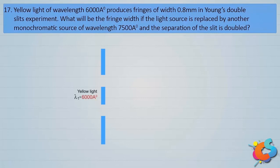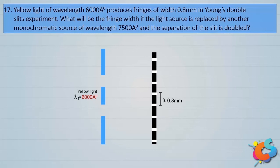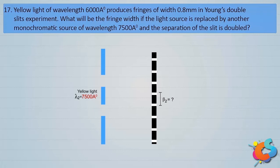Next question: Yellow light of wavelength 6000 Å produces fringes of width 0.8 millimeters in a Young's double slit experiment. What will be the fringe width if the light source is replaced by another monochromatic source of wavelength 7500 Å and the separation of the slits is doubled?